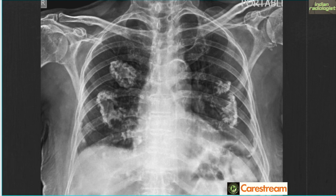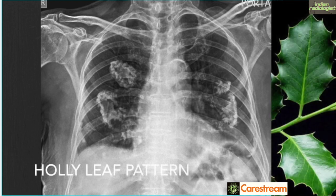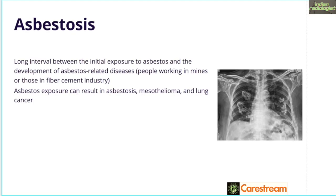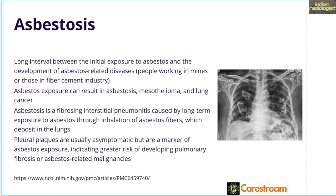What we see here are dense plaques seen on both sides, right and left. The costophrenic angles are incidentally spared in this condition and you see a classic pattern known as the holly leaf pattern. These are asbestosis plaques. There is a long interval between initial exposure to asbestos and the development of asbestos-related diseases. Asbestos exposure can result in asbestosis, mesotheliomas, and lung cancers. These pleural plaques are usually asymptomatic but are a marker of asbestos exposure, indicating greater risk of developing pulmonary fibrosis or asbestos-related malignancies.